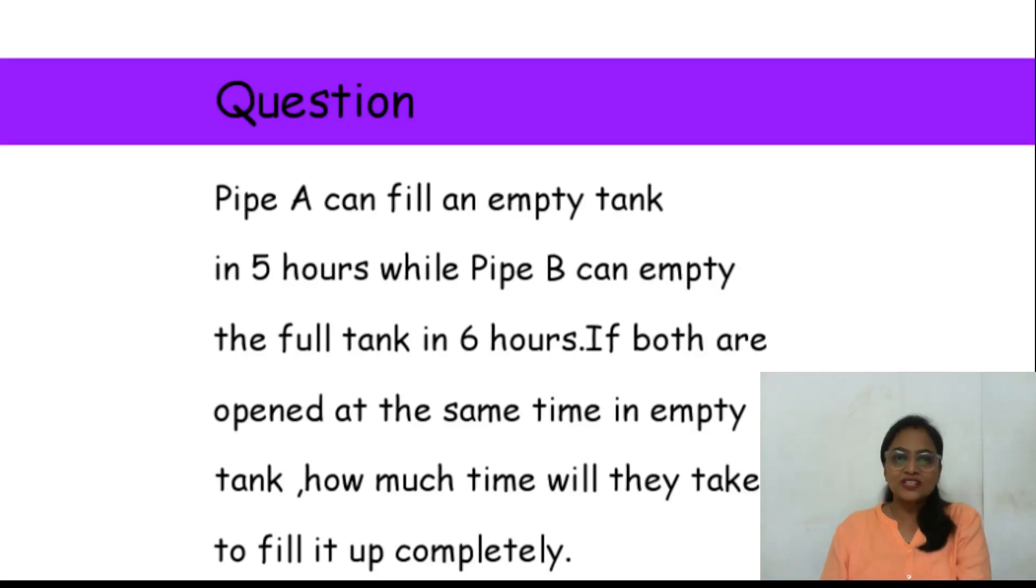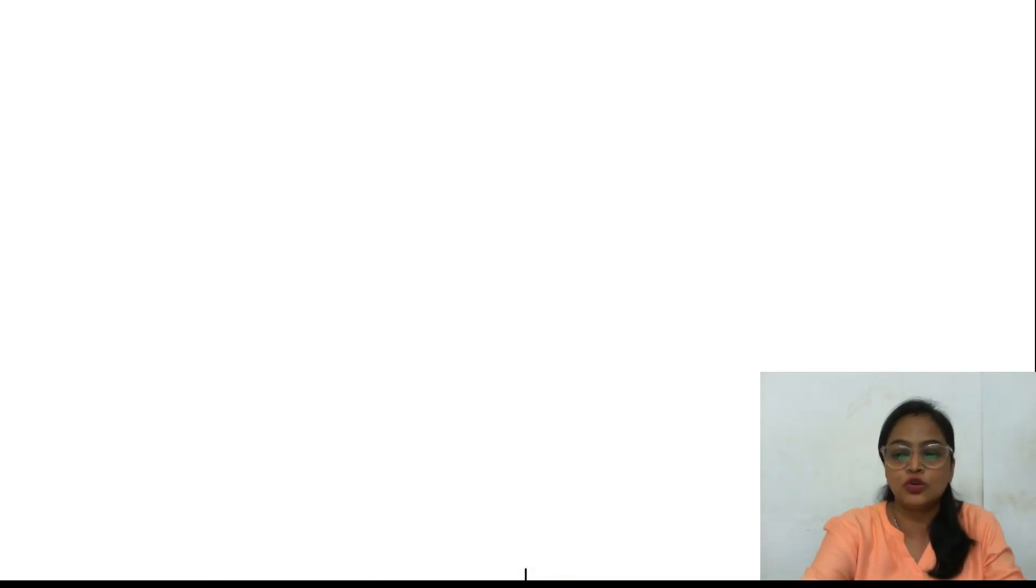Chaliye, aap question solve karte hai. First question hai, pipe A can fill an empty tank in five hours, while pipe B can empty the full tank in six hours. If both are opened at the same time in empty tank, dono, ek khali tank hai, thik hai, dono hi pipe ko saath mein open kar diya. Dekho pipe A jo hai, woh bhar raha hai five hours pe, five ghante mein woh pura khali tank bhar deta hai. Pipe B jo hai, woh kya kar raha hai, khali kar raha hai tank ko, six ghante mein woh khali kar dega. Ab dono ko saath mein unhone chalu kiya hua hai, pipe A bhi chalu kiya hai, pipe B bhi. Yeh bhar ja raha hai, yeh khali kar ja raha hai. Toh ab question yeh hai, how much time will they take to fill it completely? Matlab tank ko pura bharne mein kitna time lagega, agar dono jo pipes hai woh open hai.